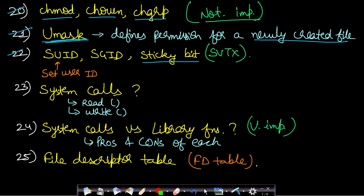The twenty-third topic is what are system calls and how to identify which calls are system calls. Some examples are the read system call and the write system call. You should also read about the benefits and cons of making system calls. The most important question from this topic is: what is the difference between system calls and library functions? Read about the pros and cons of both.